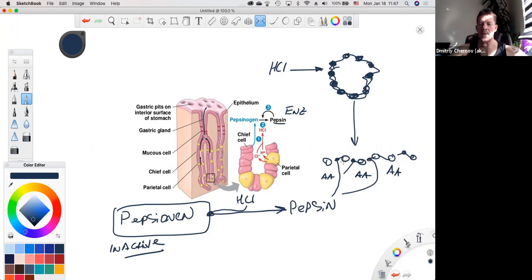Now pepsin can act on these peptide bonds and can separate these amino acids one from another. So now these amino acids are free amino acids and later on when they enter the small intestine they could be absorbed into our bloodstream. Pepsinogen, the inactive form, is being released from the chief cells and then later on will be converted by the hydrochloric acid into active form pepsin.